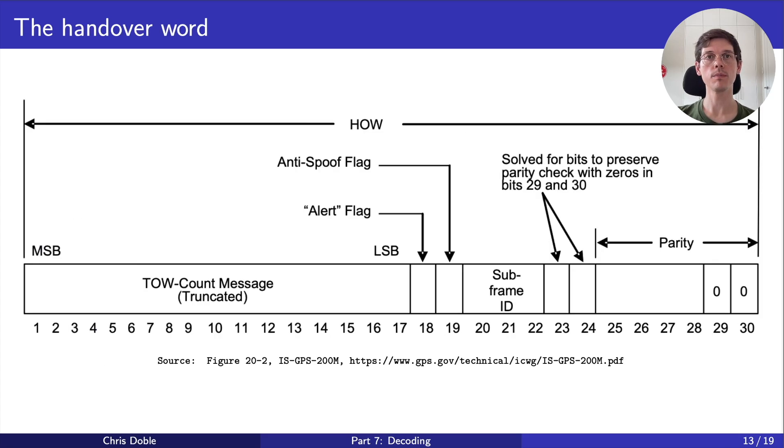Going back to the handover word, the second parameter is the alert flag. If it's set to 1, it means the satellite might be less accurate than expected. The anti-spoof flag tells us whether the military's precision signal requires cryptographic keys to use. This flag has been enabled on all satellites since early 2000, so unfortunately we can't use the precision signal. The subframe ID is an integer from 1 to 5, telling us what kind of subframe this is. This tells us how to decode the rest of the subframe. And finally, all the remaining bits are parity bits.